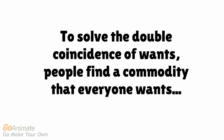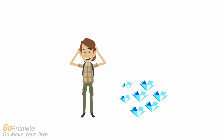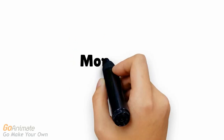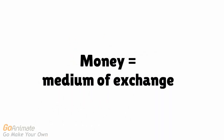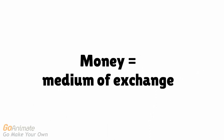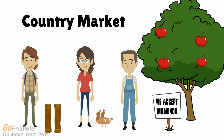To solve the double coincidence of wants, people will find a commodity that everyone wants — like Billy discovering a diamond mine — and try to gain a surplus of that commodity, not because of its usefulness, but because they can trade it to gain what they want. And that is what money is: a medium of exchange. See how much easier it is to trade now? Everyone is willing to trade his or her goods for diamonds.